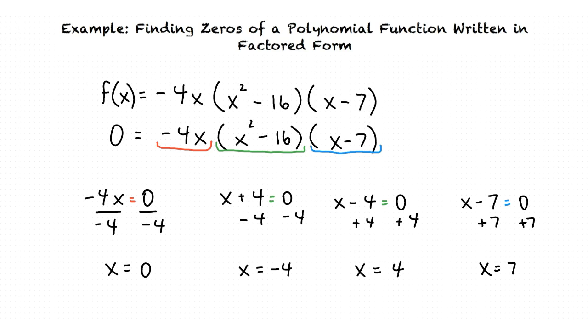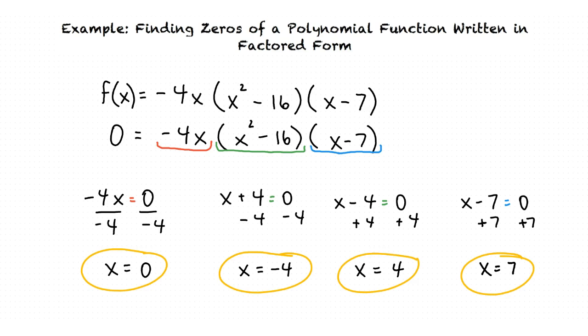After solving each of our factors, we find that x equals 0, x equals negative 4, x equals 4, and x equals 7 are all real zeros for the function f of x.